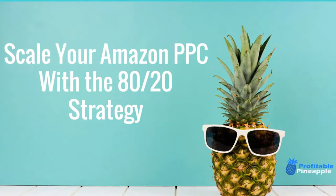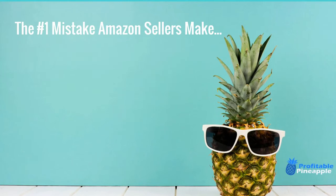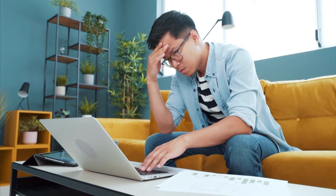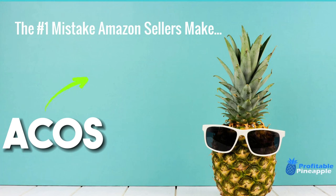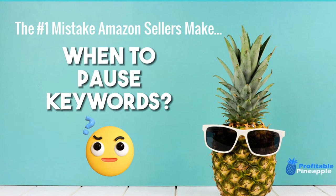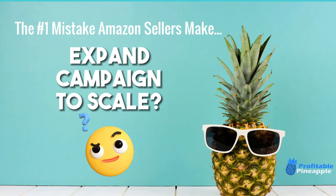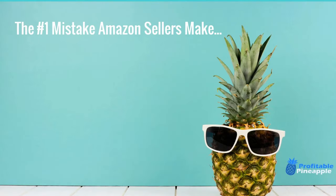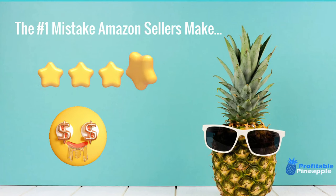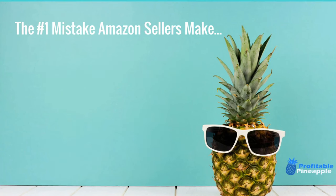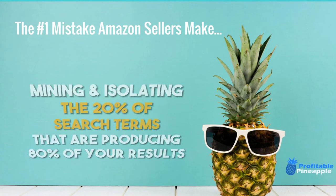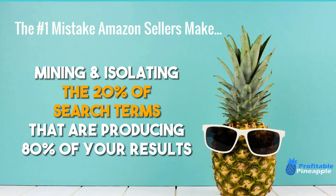Scaling your Amazon PPC with my 80-20 strategy. Amazon PPC can be as difficult or as simple as you want to make it. What I commonly see when I work with clients is that you've been implementing way too many different strategies and you're now confused as to what to do next. Your ACoS is sky high, but you're not even sure what your ACoS should be. You don't know when you should pause keywords or just change the bid, and you don't know how to expand your campaigns to scale them.